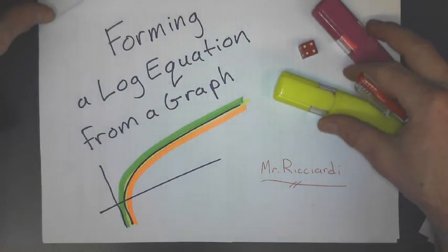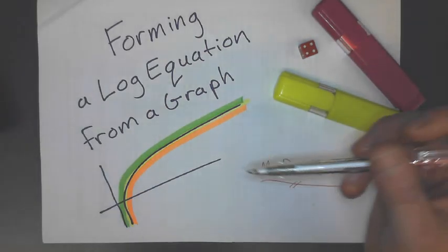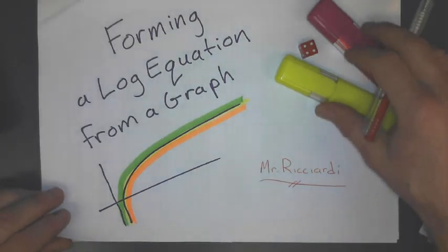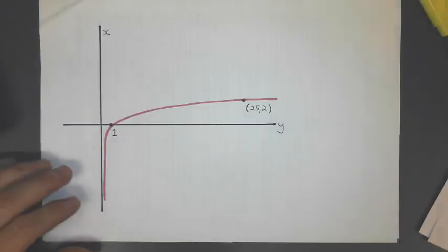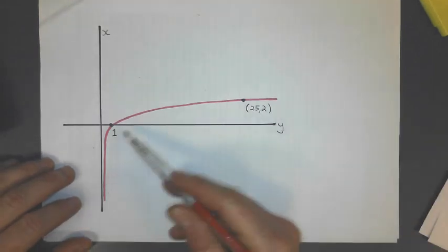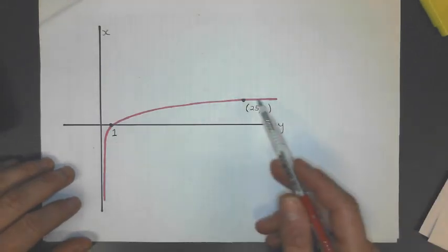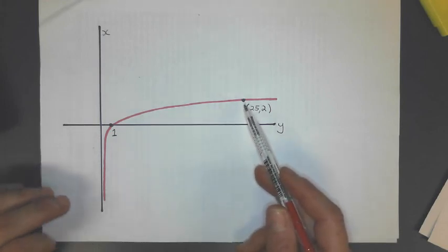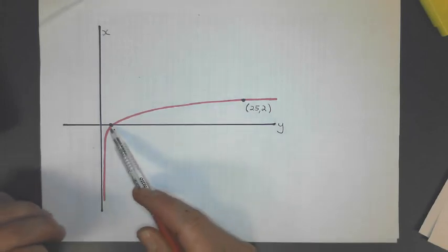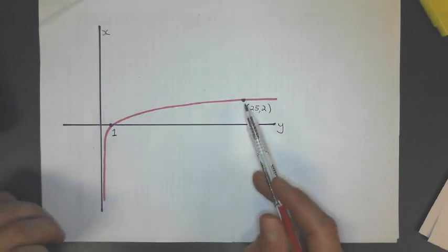Okay, what we'll do in this lesson is I'll show you how to form an equation from a log graph. So here's the first example of what we're doing. We'll be given a logarithmic curve with a couple of points on them. And just to get started, all of the curves that we're working with today, I'll give you the x-intercept and some other point on that curve.